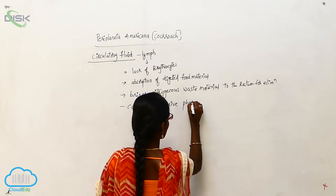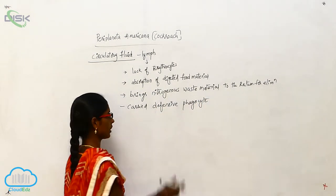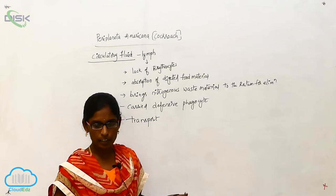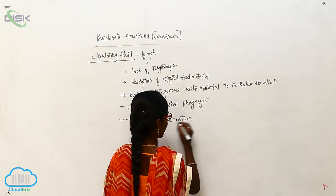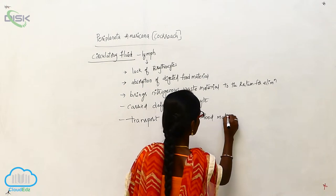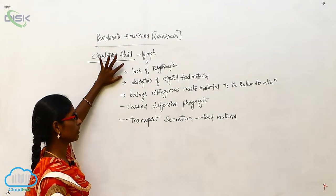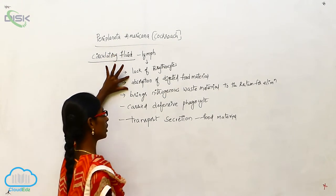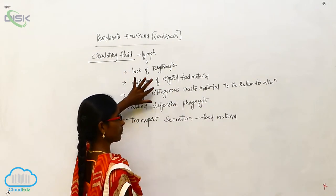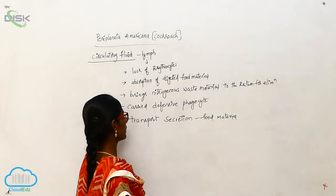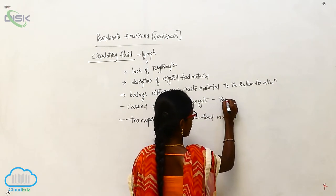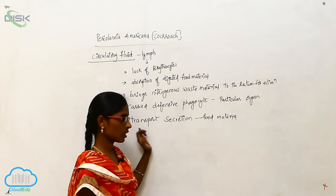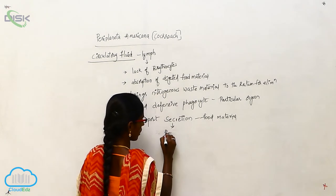Lymph carries defensive phagocytes to particular organs. It also lacks erythrocytes but has some WBCs, which are called defensive phagocytes. It is involved in absorption of digested food material, brings nitrogenous waste to the rectum for elimination, and carries defensive phagocytes to particular organs.